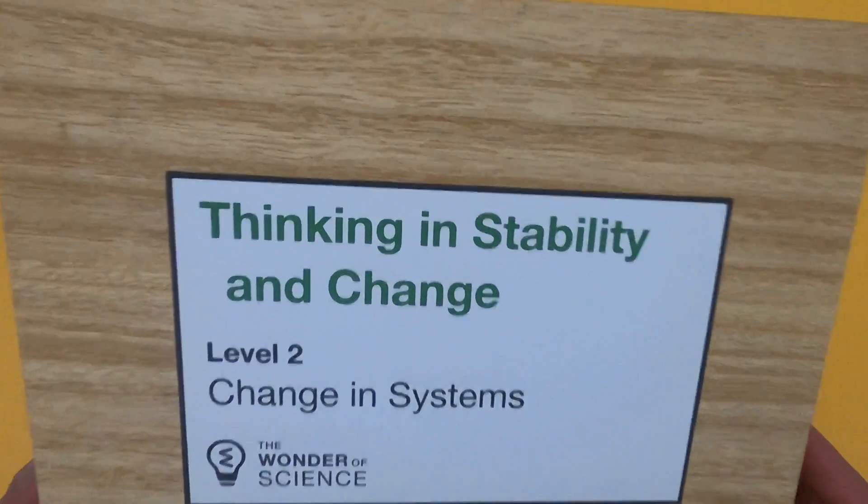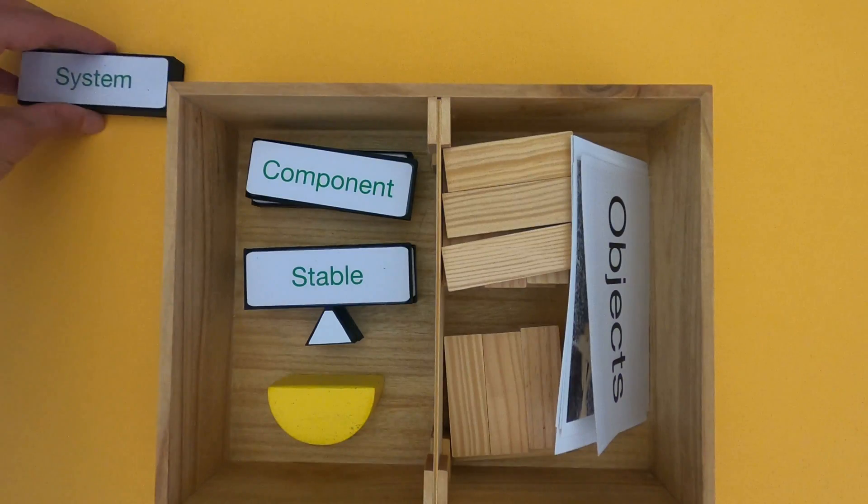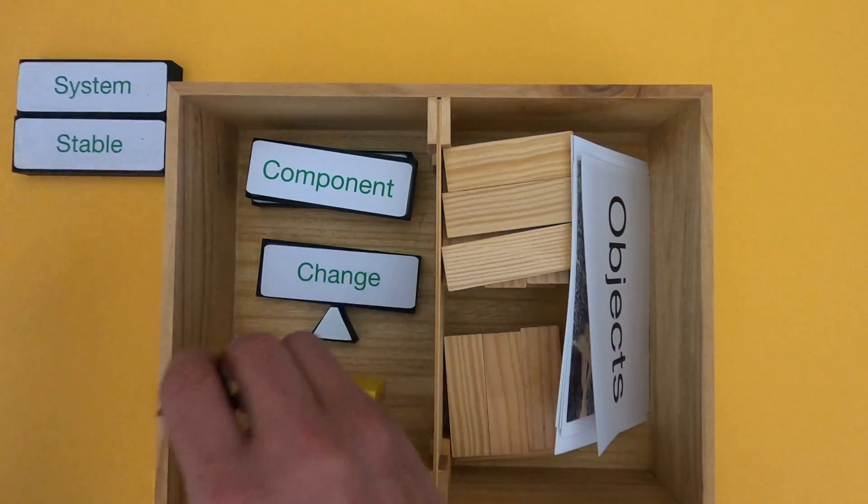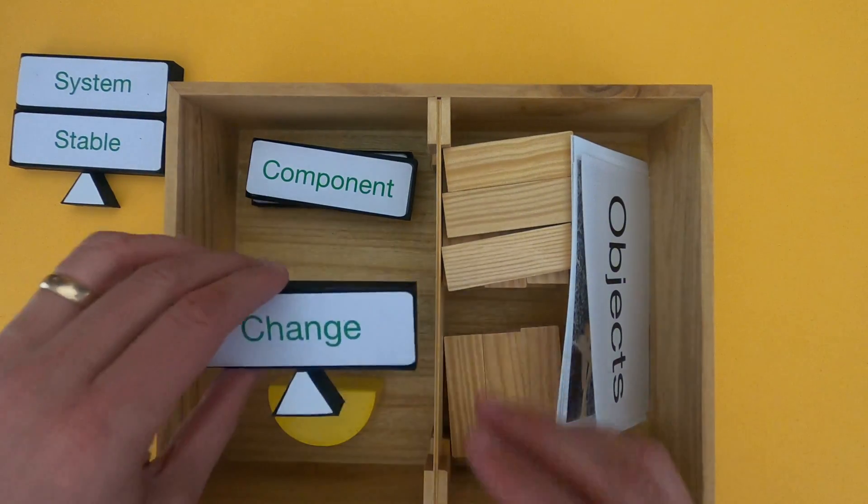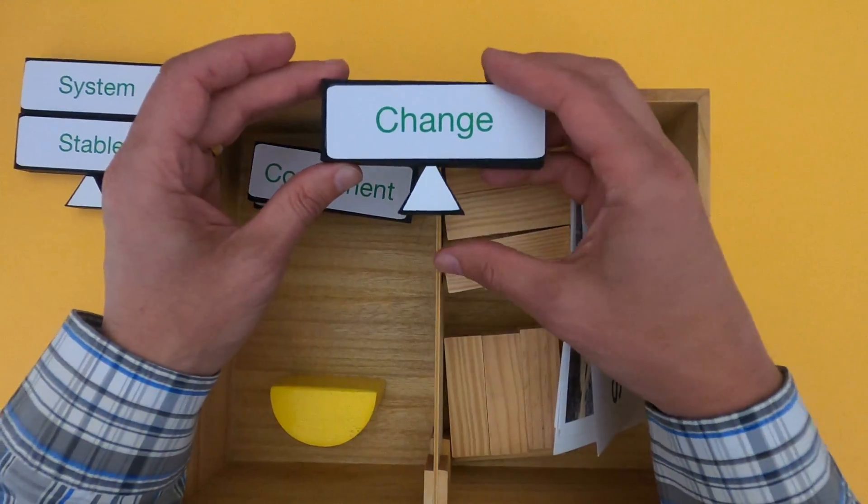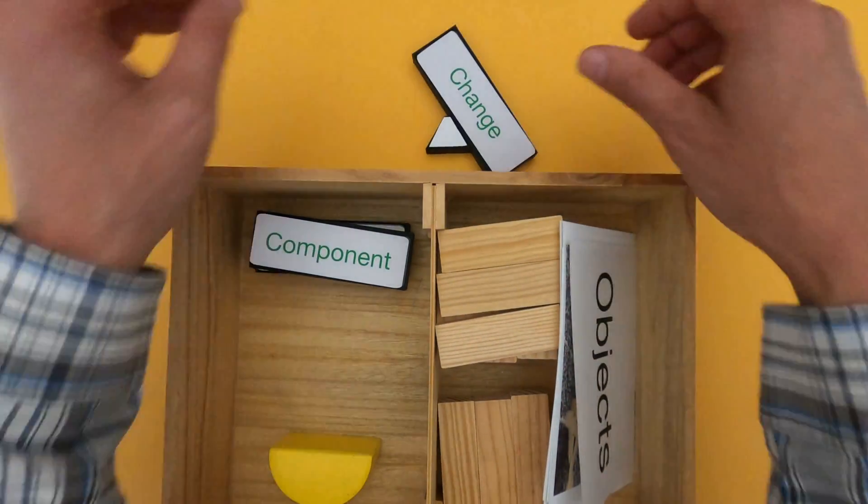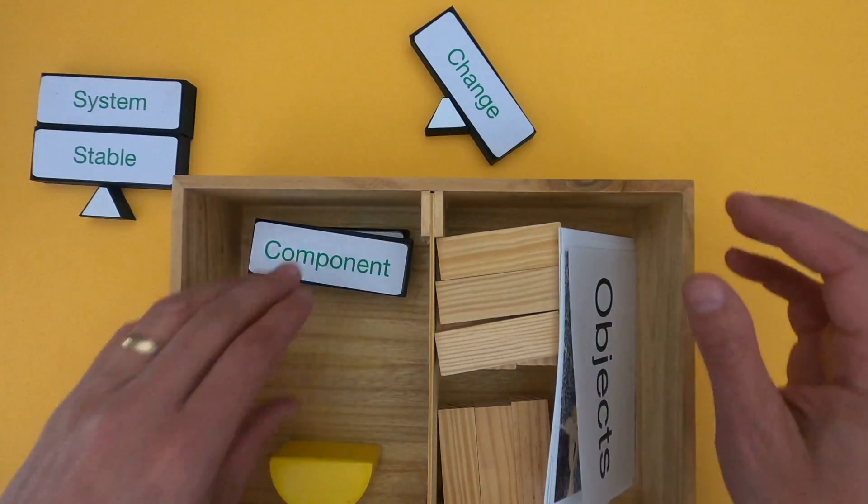When you're investigating systems, the first thing you want to do is define the system that you're investigating. We're going to be looking at stable systems - those that are not changing very much. We'll then be looking at how change can occur in a system. How can we have a stable system that becomes unstable? What we'll really be digging into is the specifics of a system.